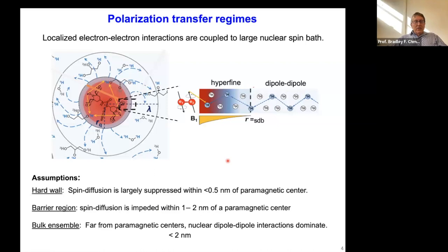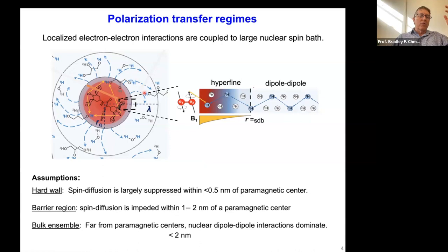Here are the polarization transfer regimes. We have localized electron-electron interactions between spins in the bi-radical. They are coupled to each other in the case of the cross effect, but also coupled to the large nuclear spin bath — the frozen solvent around it, which could be tetrachloroethane, dichlorobenzene, or glycerol-water depending on your sample. For biochemical systems they're basically all the same, so the optimization has essentially already been done.